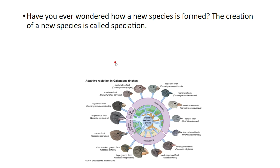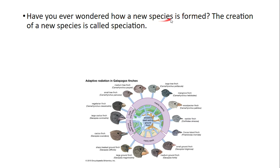So when we're talking about speciation, we're talking about how a species is formed. So we're actually going to look at four different mechanisms of how a new species is created. And that process is called speciation.